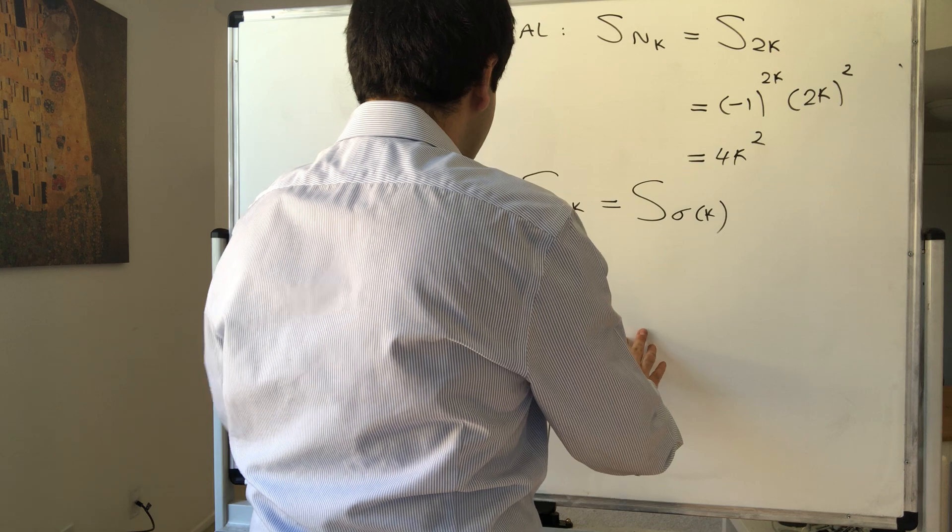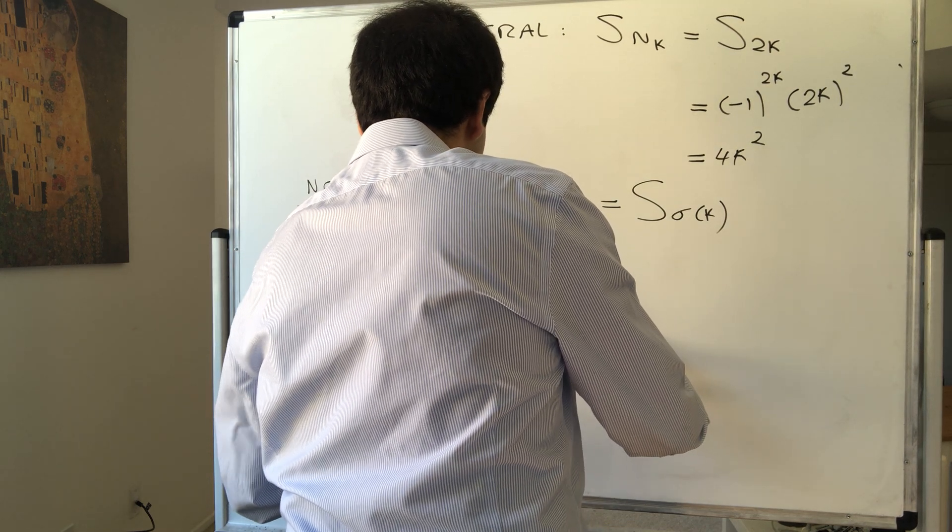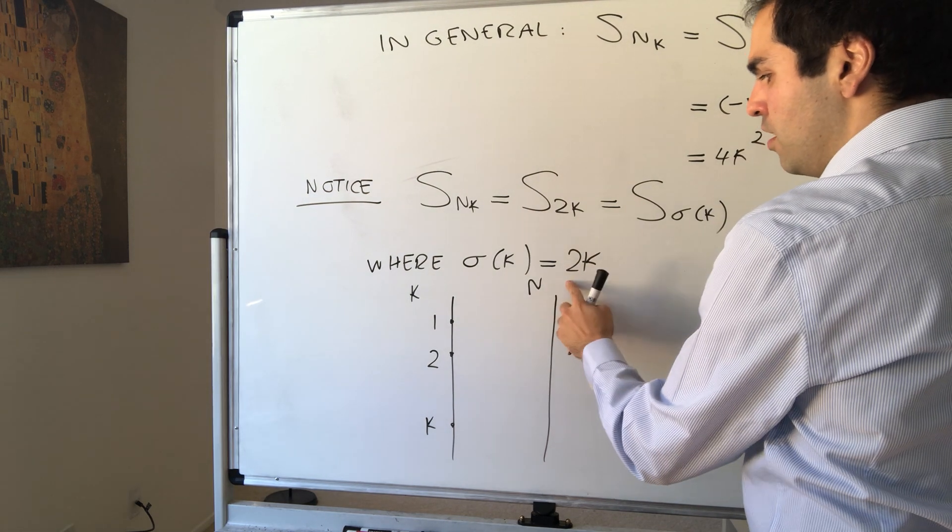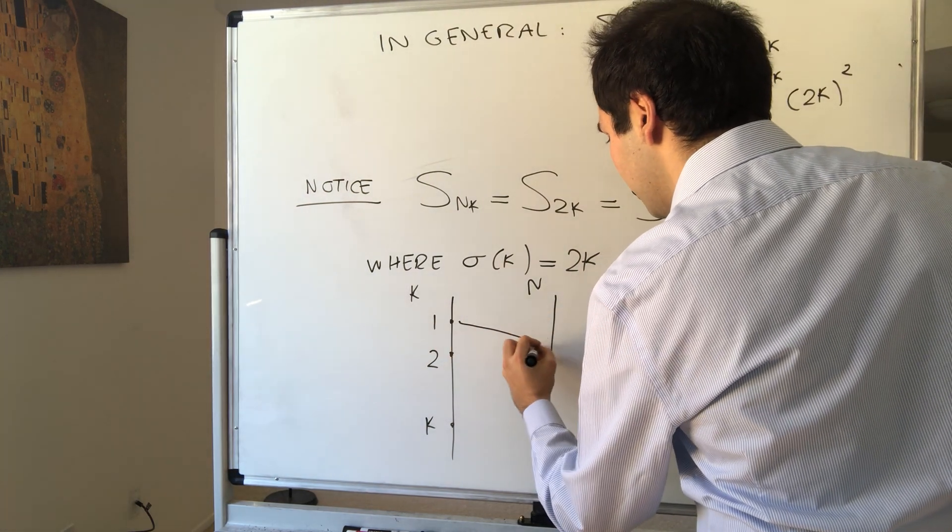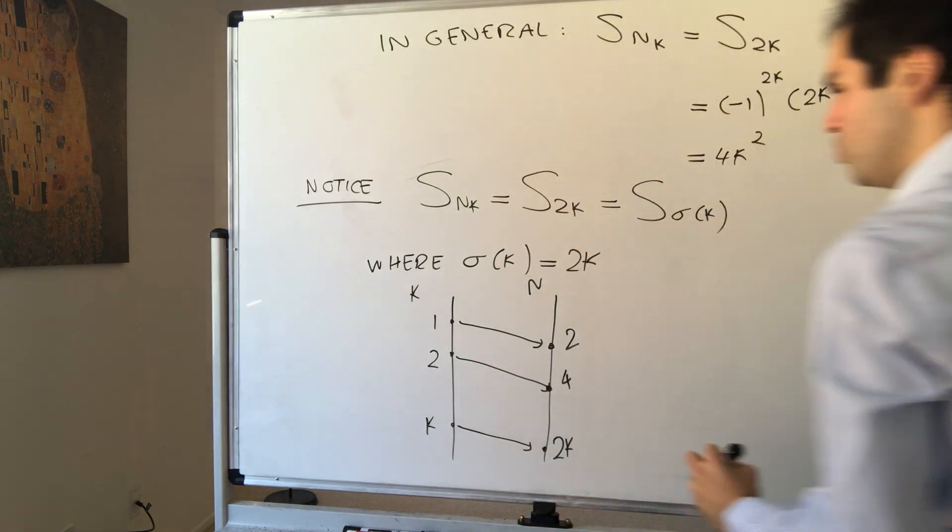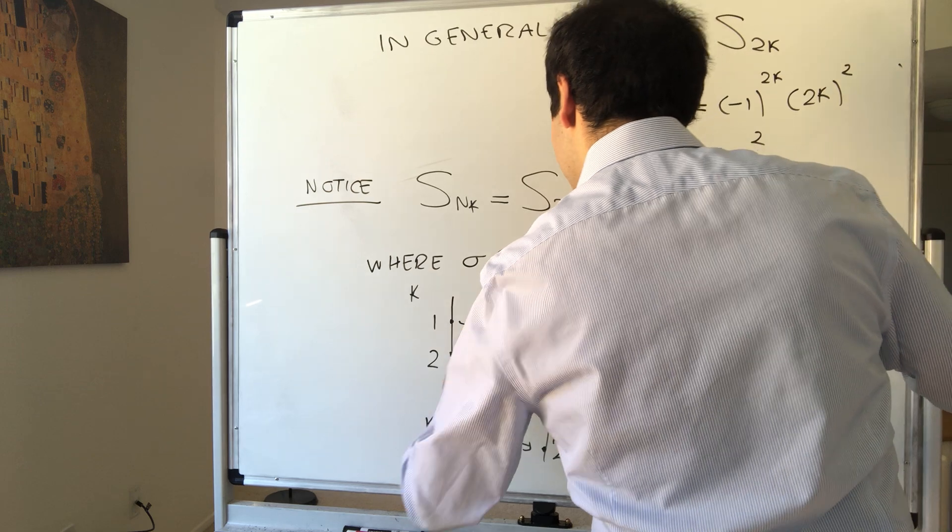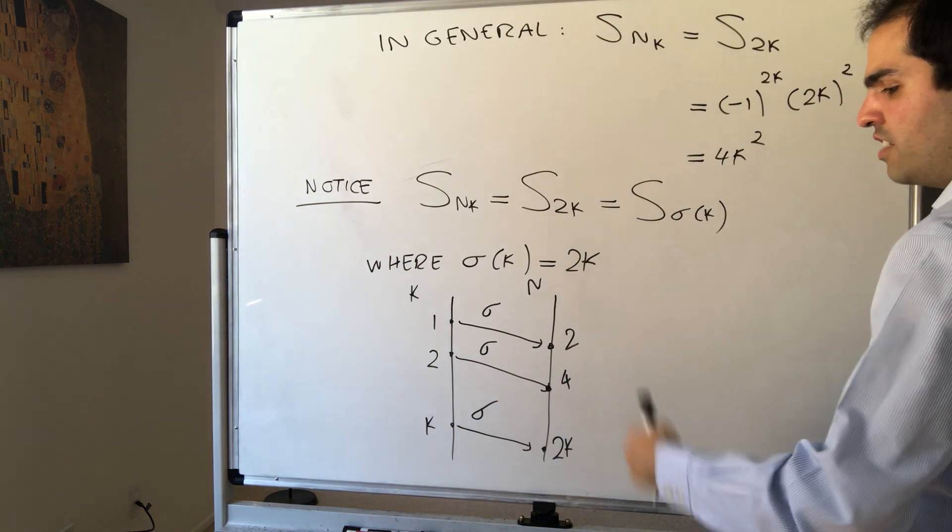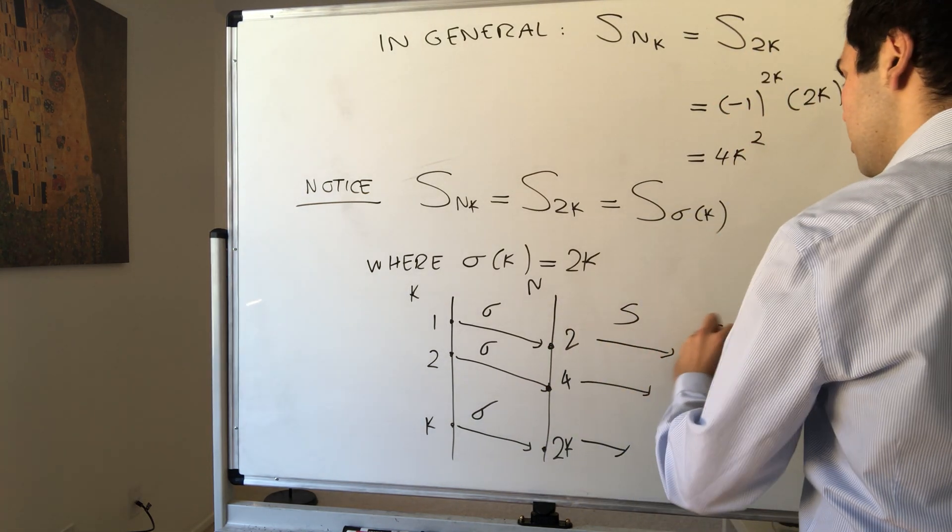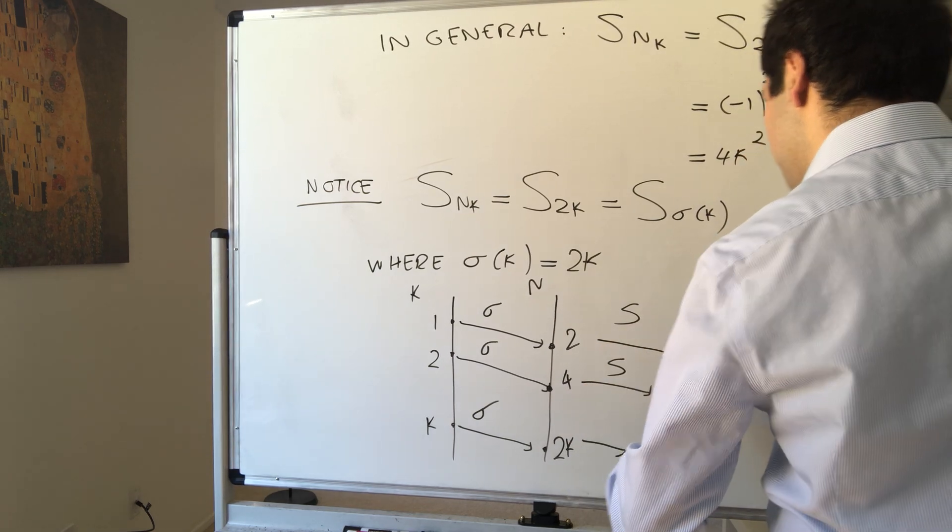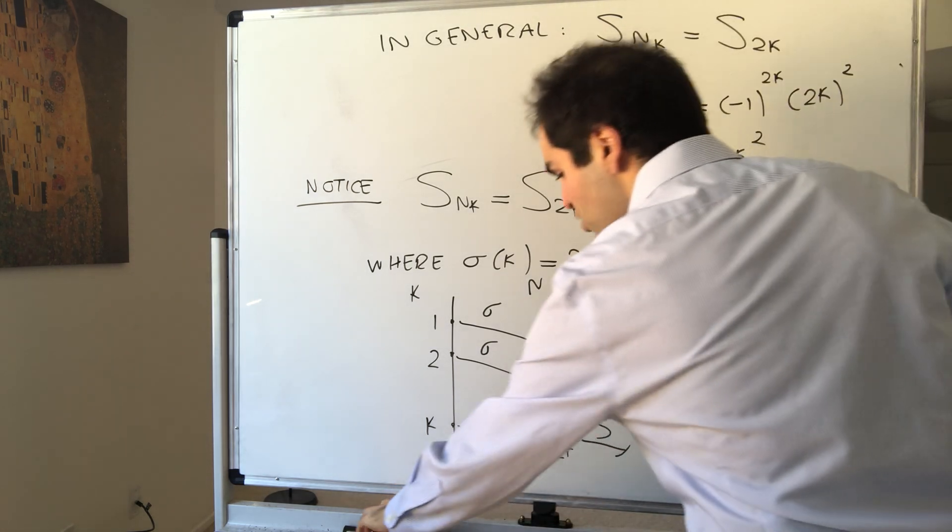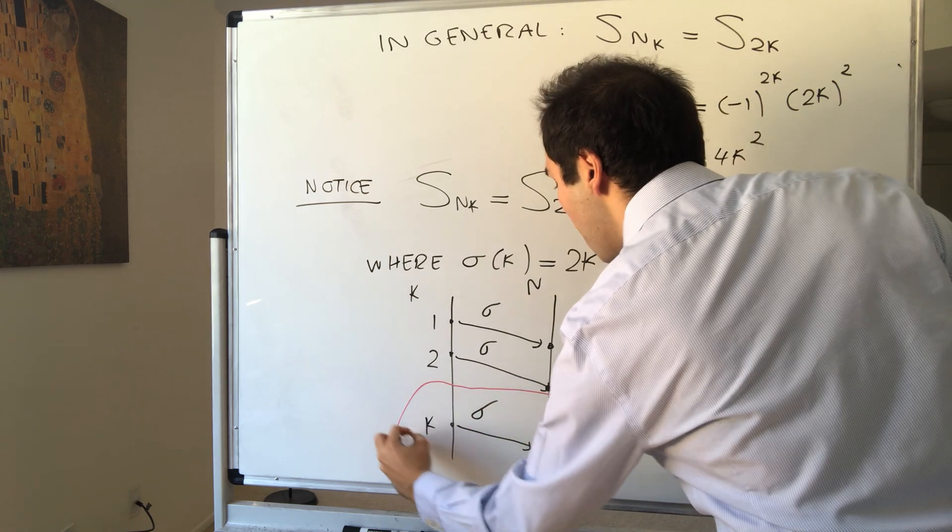Well, you start with k. So think either 1, 2, or in general k. Then, this function sigma, sometimes called a selection function, selects a special value of n, which here is really all even ends, like 2, 4, and k, which is 2k. k becomes 2k. And then what is our sequence? Well, remember, sequence is really a function from the natural numbers to the real numbers.